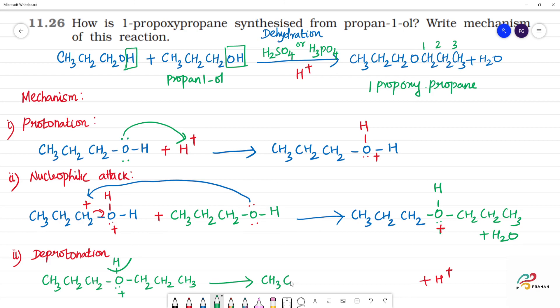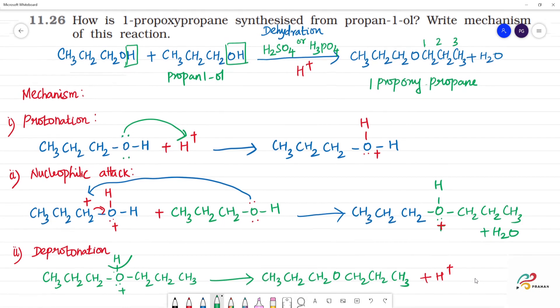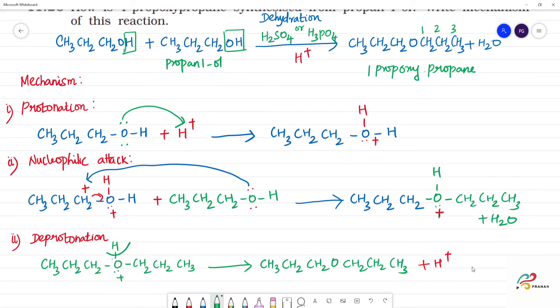Let's see: CH3-CH2-CH2-O-CH2-CH2-CH3. Here H+ is removed, the lone pair of electrons are neutralized. So we got the correct mechanism. This is 1-propoxypropane.